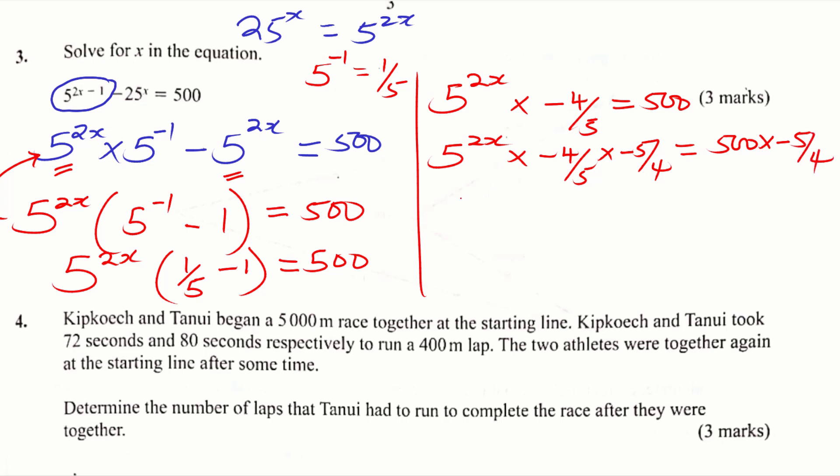So on the left hand side, you'll be left with 5 raised to power 2x equals 500 multiplied by negative 5 over 4, which will be negative 625. Trying to express the left hand side and the right hand side to the same base, you'll get 5 raised to power 2x equals negative 625. Negative 625 is the same as negative 5 raised to power 4. So this will be negative 5 raised to power 4.